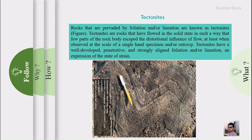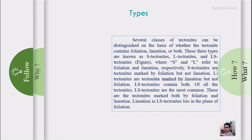Tectonites have a well-developed, penetrative, and strongly aligned foliation and/or lineation. As mentioned, these represent the alignment of minerals in a rock as either a line-like or sheet-like structure. A tectonite is an expression of the state of strain of that particular rock — if you see foliation or lineation in a rock, it has been strained due to applied stress.